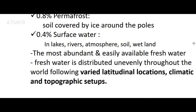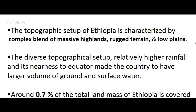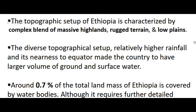Fresh water is distributed unevenly throughout the world following varied latitudinal locations, climatic, and topographic setups. The topographic setup of Ethiopia is characterized by a complex blend of massive highlands, rugged terrain, and low plains. This diverse topographical setup, relatively higher rainfall, and its nearness to the equator have made the country possess a larger volume of both ground and surface water.